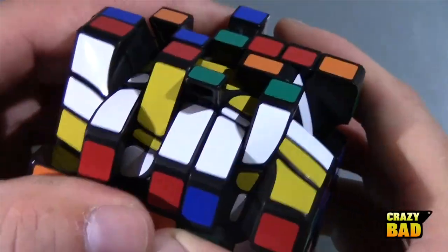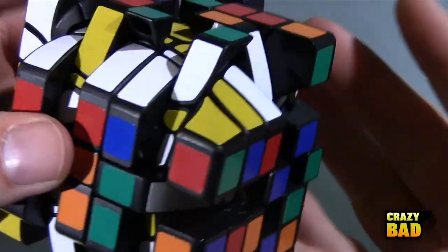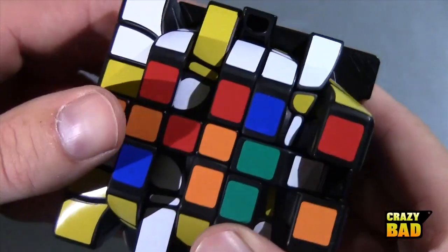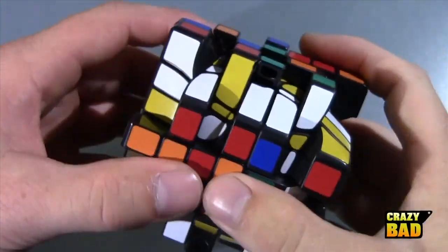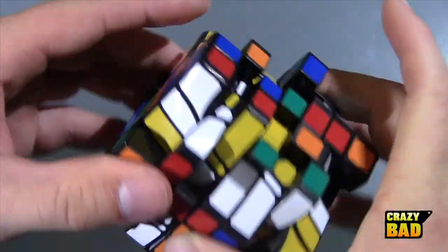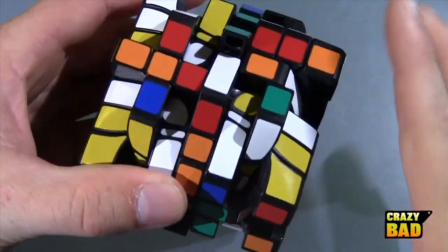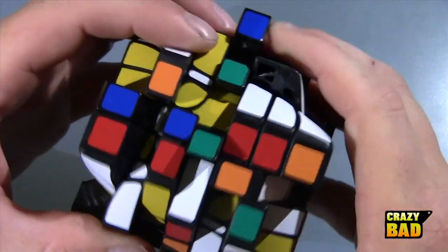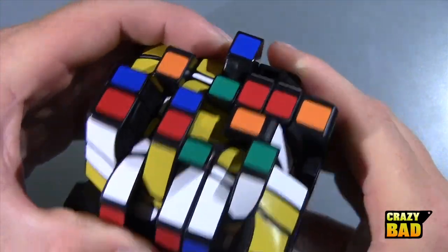Now when you have a bandaging puzzle like this, basically what it turns into when it's completely scrambled and bandaged is its lowest number. So here we have a 3x7x7, so now it's turned into a 3x3x3 because you can see that this whole three layers here are now bandaged together and so are these three. So that's 1, 2, 3 and it's like that on every side.